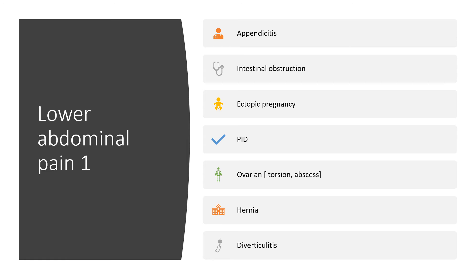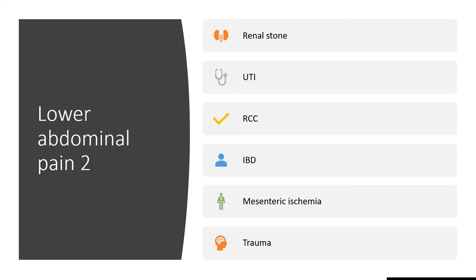Ovarian torsion or ovarian abscess. Hernia — something is protruding when you cough or sneeze. Diverticulitis if it is the left iliac fossa. Could be renal stone. Could be urinary tract infection — burning urine, fever, urinating more frequently. Could be renal cell carcinoma when an individual is losing weight with blood in urine. Could be inflammatory bowel disease like Crohn's or ulcerative colitis. Could even be irritable bowel syndrome, associated with pain.